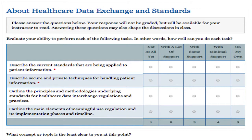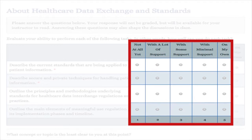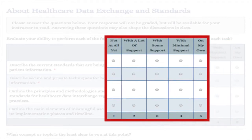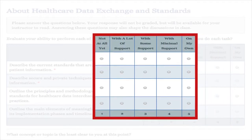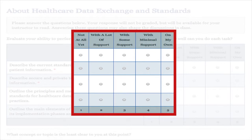Here is another example of progress monitoring. This example explicitly asks the learner to evaluate their performance on a recently completed module. This prompts the learner to think about the level of supports they needed and what concepts or topics remain unclear.